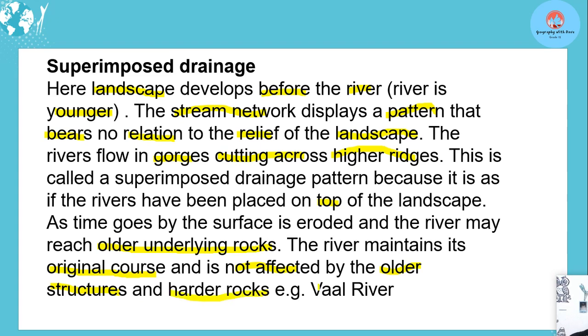It maintains its course even through harder rocks. A good example is the Vaal River, which is a superimposed drainage.